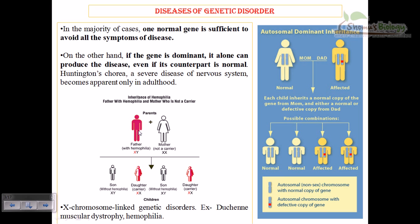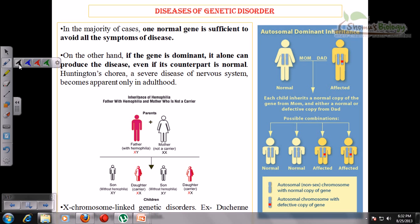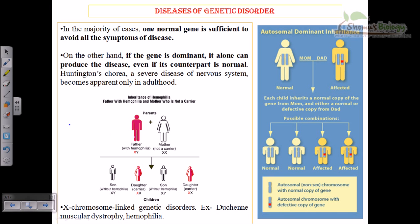On the other hand, talking about X-linked inheritance: hemophilia is an example. Here the father has hemophilia because the hemophilia gene is present on his X chromosome. The mother is normal. Hemophilia follows an X-linked inheritance pattern — the disease gene is present on the X chromosome.